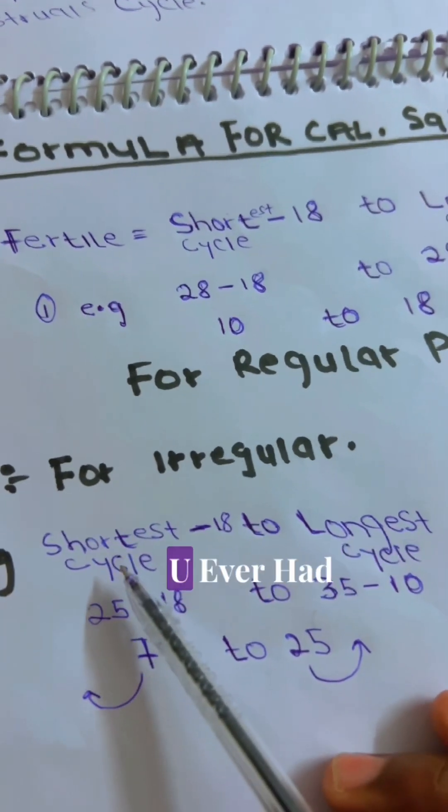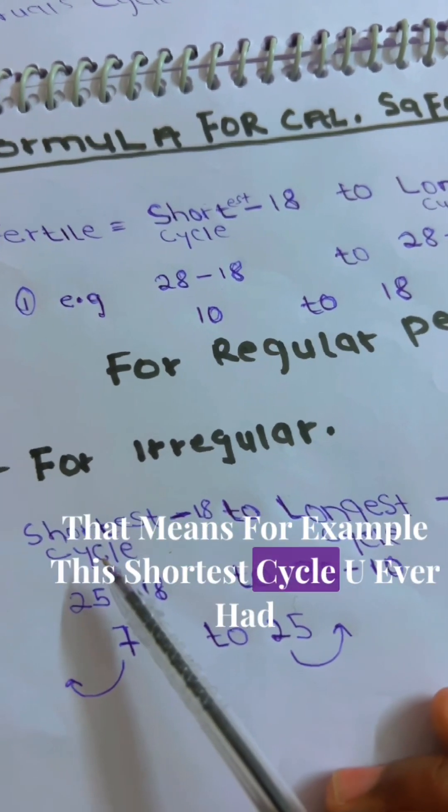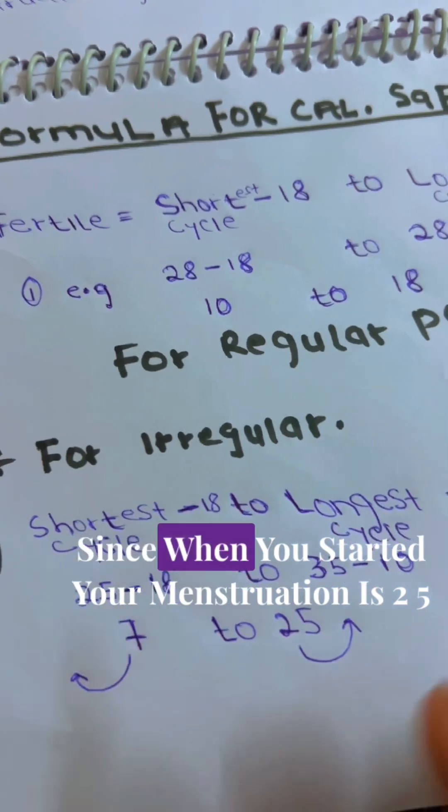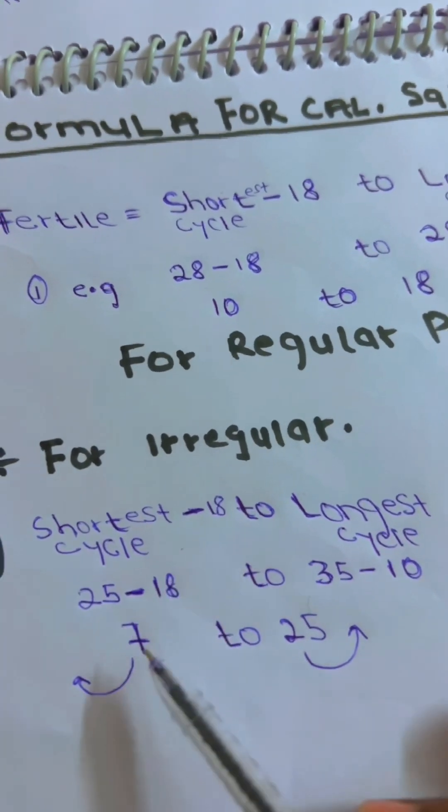And you think about the shortest cycle you ever had, that means, for example, let's say the shortest cycle you ever had since when you started your menstruation is 25. 25 minus 18, that is 7.